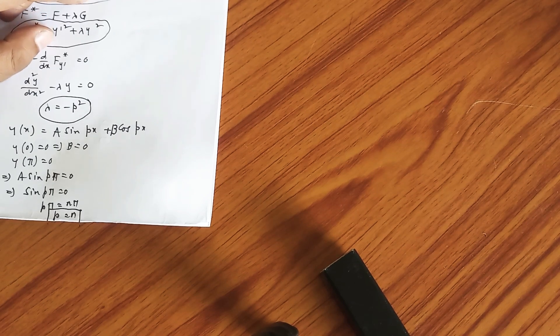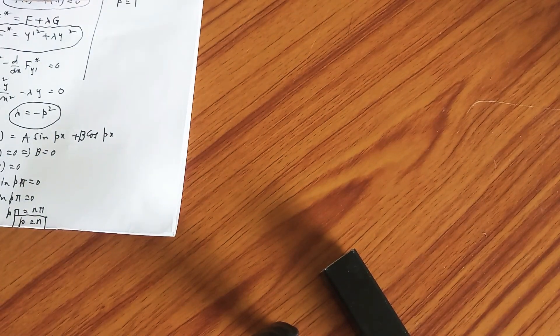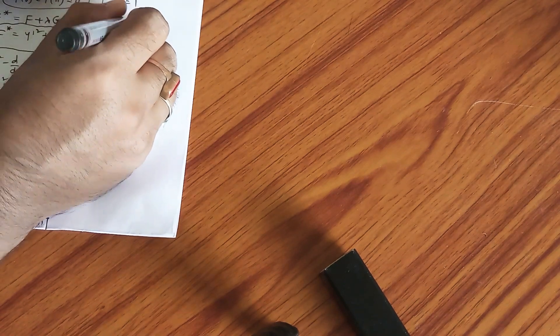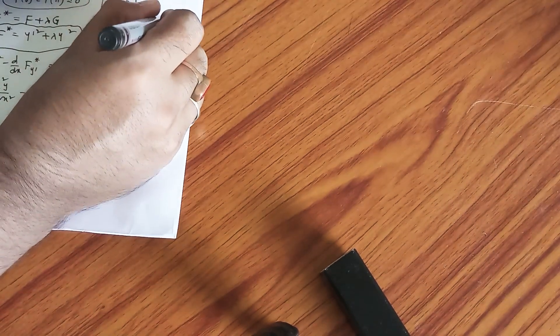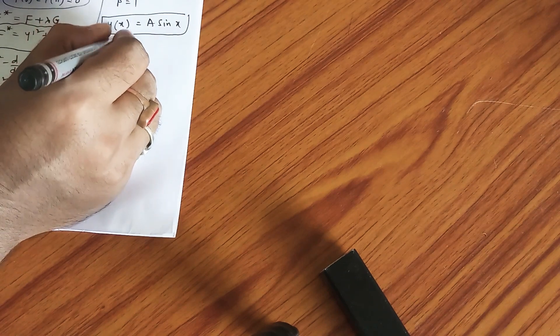But in the options sin x, cos x are there, so we have to choose a particular case here to solve this problem - that means we need to take p = 1, that means n = 1 we are taking. Finally we are getting our y(x) as a sin x, which immediately implies your third and fourth are ruled out.